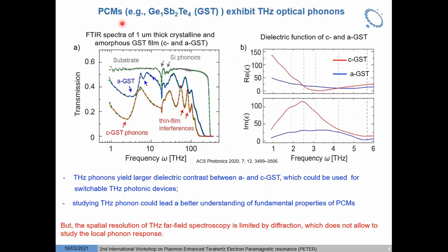Moreover, these two stages of the phase change material can be reversibly switched by electric and optical pulses. Such flexible and fast switching capability between two stages makes phase change material also promising for photonics applications. Particularly, phase change material has optical phonons at terahertz frequency. For example, one of the typical phase change materials, GST, from far-field spectroscopy we can clearly see the optical phonon at terahertz frequency for different GST stages.